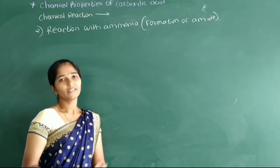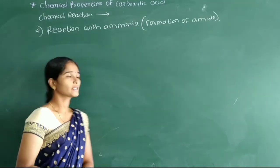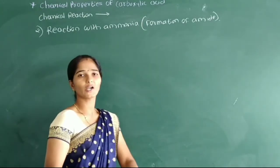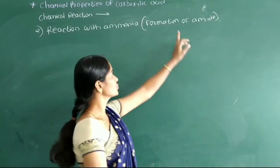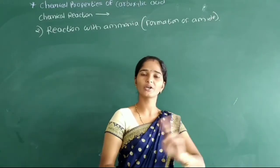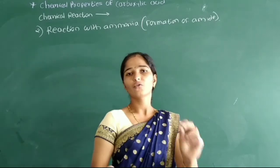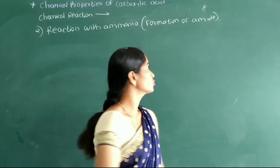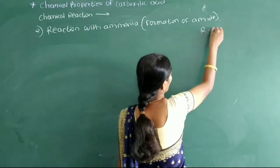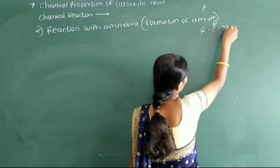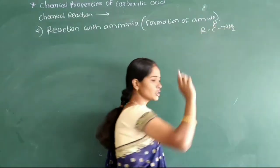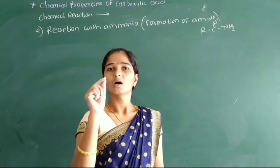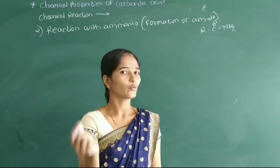Now we see the second chemical reaction of carboxylic acid — that is, reaction with ammonia. Carboxylic acid reacts with ammonia to form amides. This second reaction is also known as formation of amides. The functional group of amides is RCONH2.